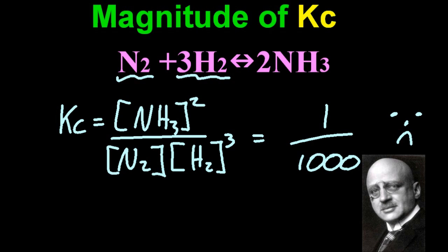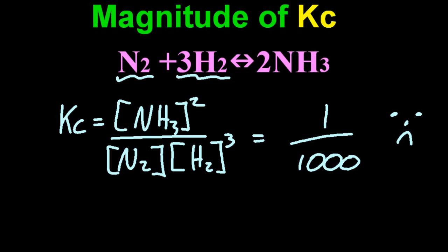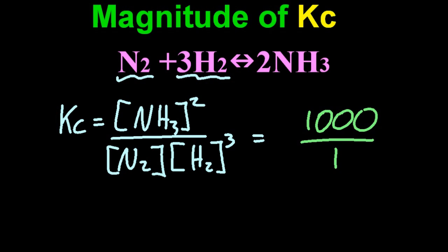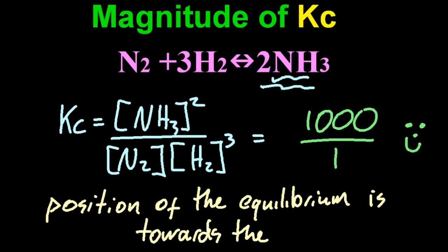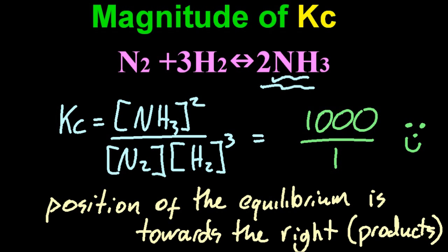The guy who worked this out is Fritz Haber. He worked out a way to improve Kc for this reaction. It is slightly mentioned in the IB. So let's say Kc is now a thousand over one — products are very heavily favoured here. We say the position of the equilibrium is towards the right, or towards the products. That's the IB terminology.